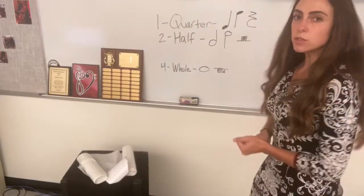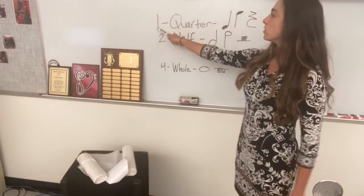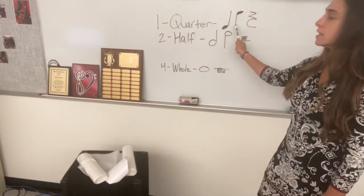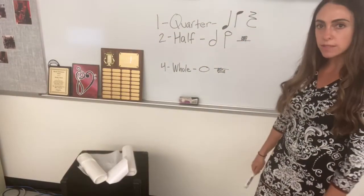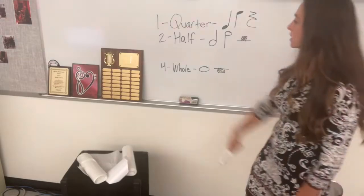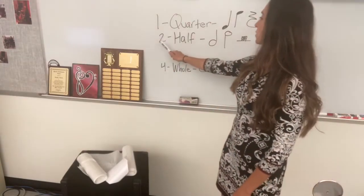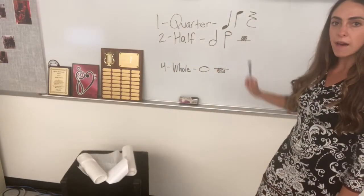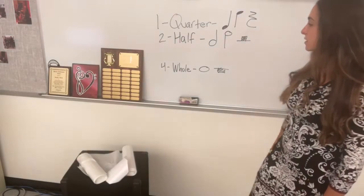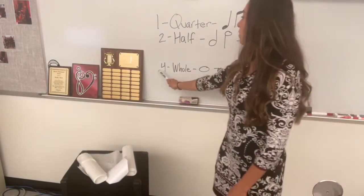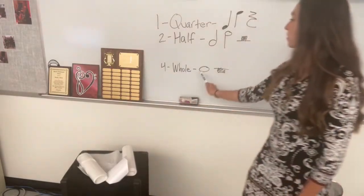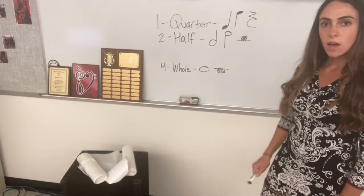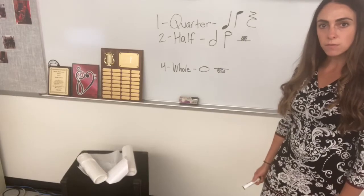For your level two quiz, you need to know that a quarter note is worth one beat and can look like this, this, or that — that last one being the quarter rest, which is silent. A half note is two beats and can look like this or this; the half rest is two beats of silence. The whole note is four beats, and the whole rest is also four beats of silence.